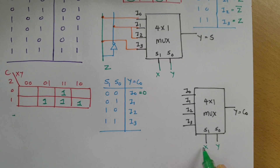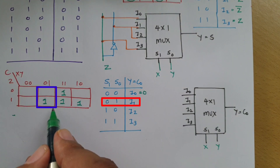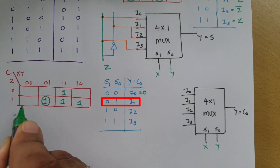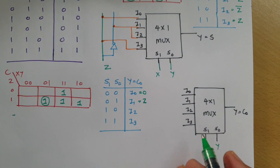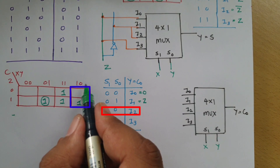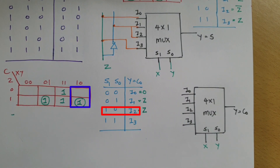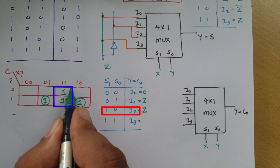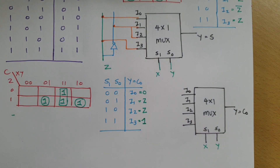When x and y are 0,1 — I1 gets selected. The K-map box at x=0, y=1 shows z equals 1, so I1 equals z. When x and y are 1,0 — I2 gets selected. The K-map solution for that box is again z, so I2 equals z. When x and y are 1,1 — I3 gets selected. The entire box for x=1, y=1 is 1, so I3 equals 1.